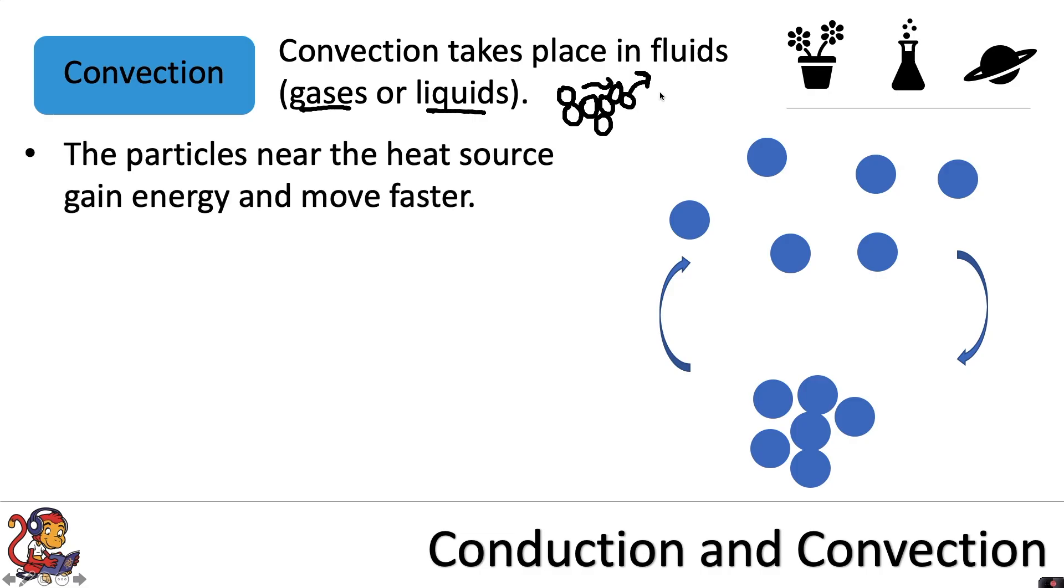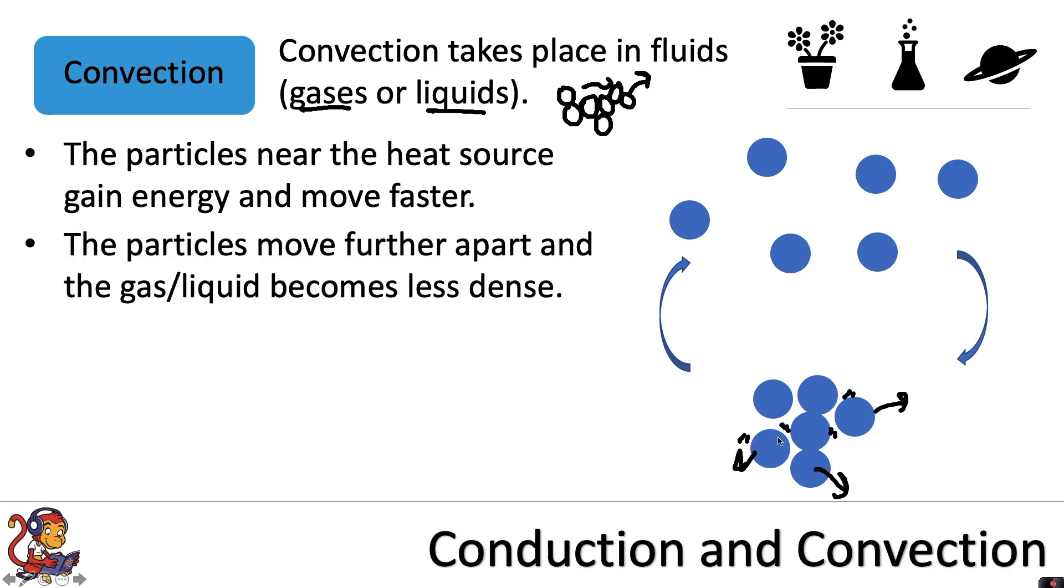In convection the particles near the heat source gain energy and move faster. So these particles down here will gain more energy and start to move faster. The particles move further apart and the gas or the liquid becomes less dense.